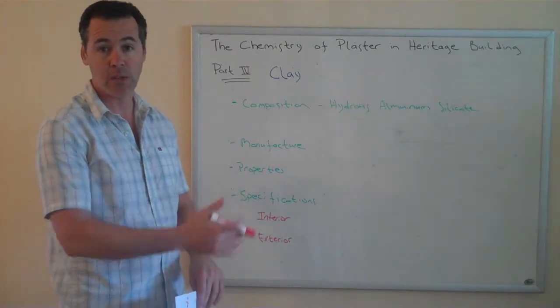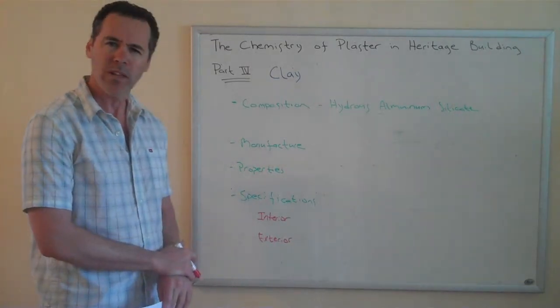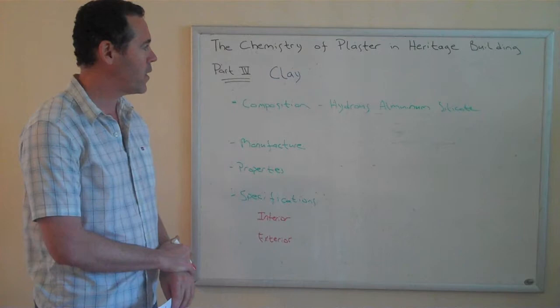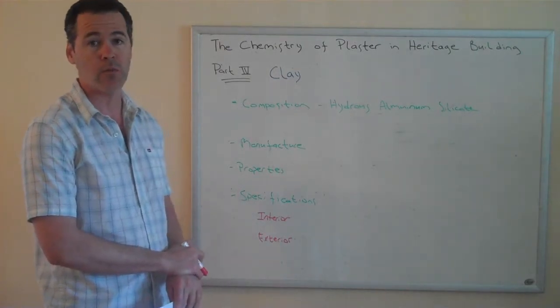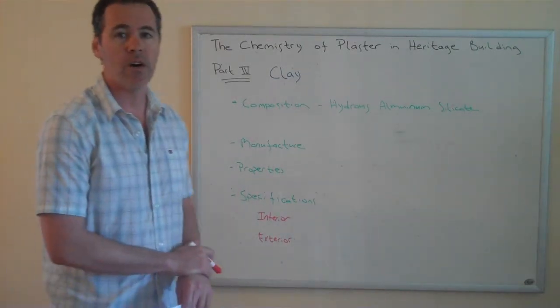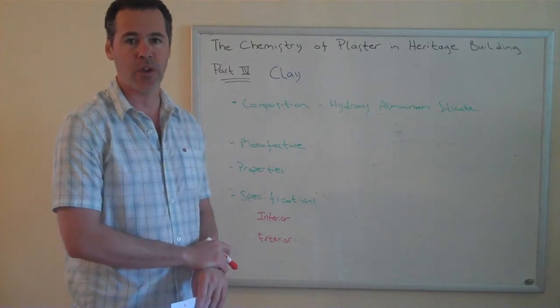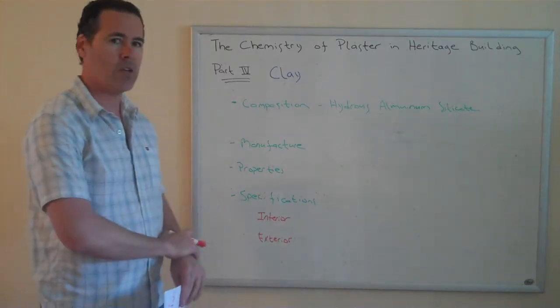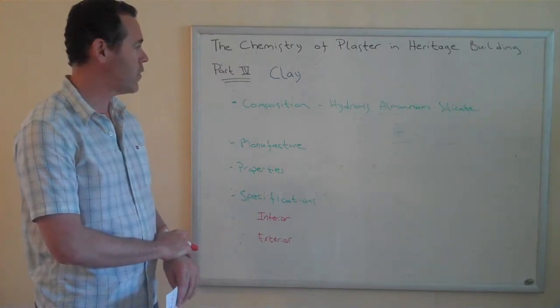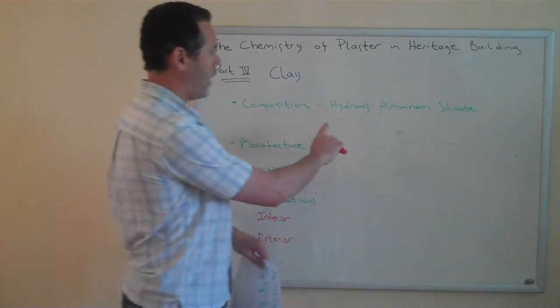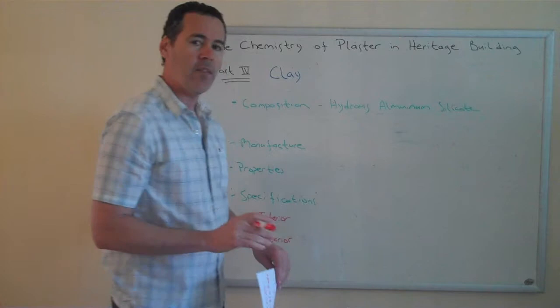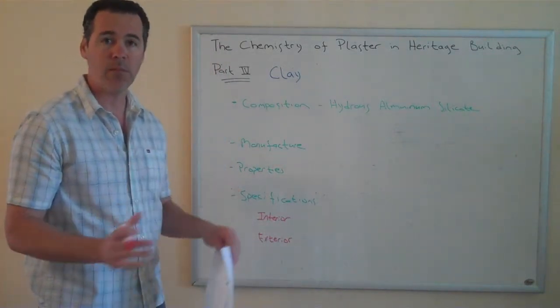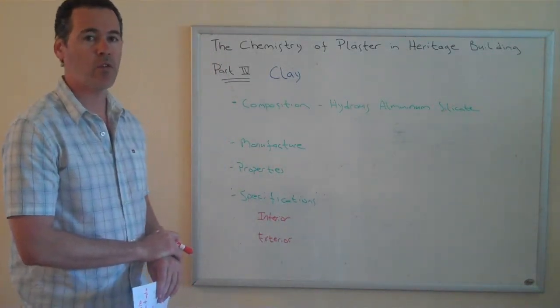Clay is perhaps the original binder. And what is clay exactly? It's a result of erosion, specifically of silicon dioxide-type stones such as granite or feldspar, for millions of years. The resulting product is a hydrous aluminum silicate, and that describes at least a family of clays that are useful for plastering.